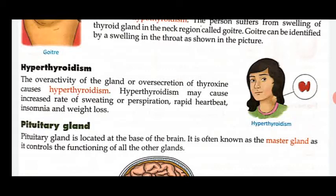Hyperthyroidism may cause an increased rate of sweating and perspiration. People with excess thyroxine experience rapid heartbeat, insomnia — meaning inability to sleep — and weight loss. These problems occur when thyroxine secretion is too high in the body.